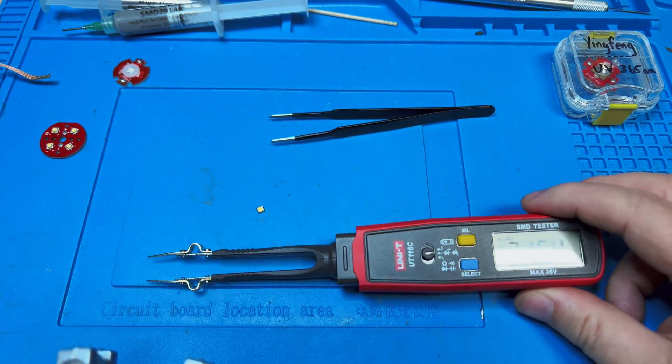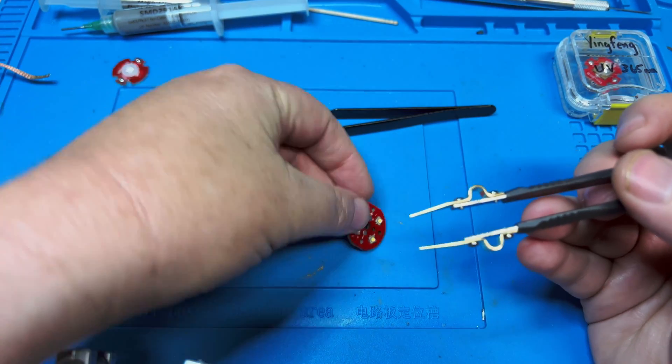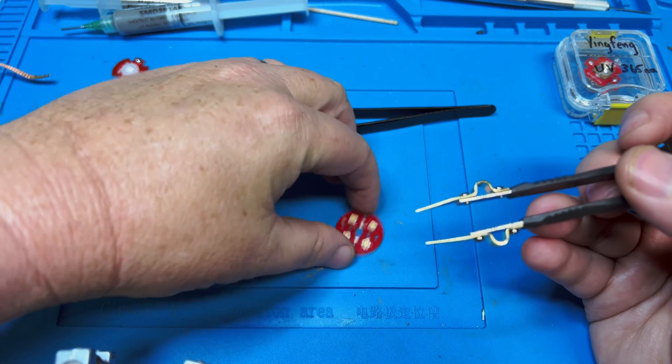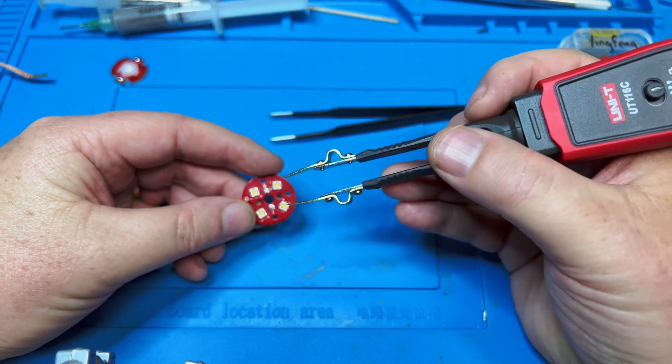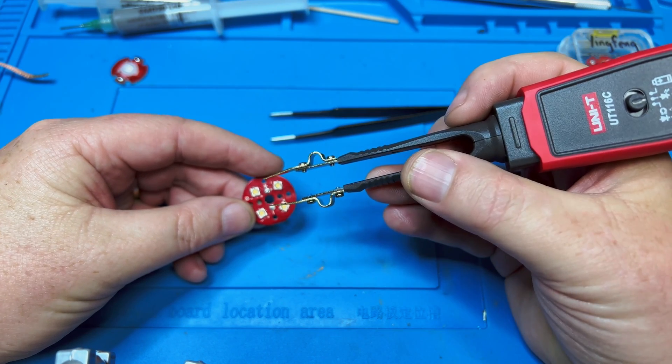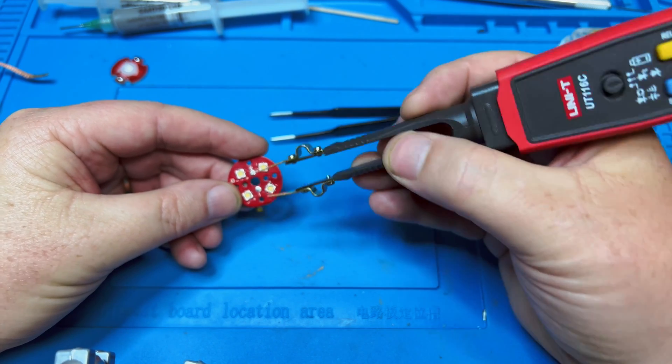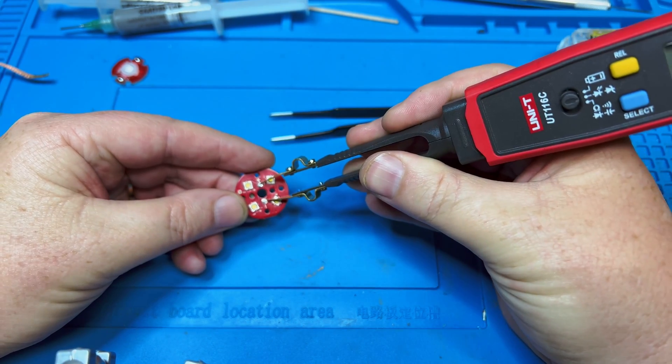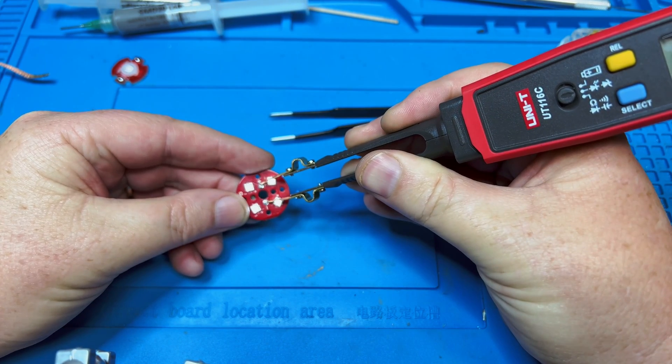Another kind of cool thing you could do with it—last thought before I sign off—is let's say this is installed in the light and you're not sure if you have any shorts before you turn on the light and fry the driver because it's shorted. I would do three steps. I would touch it to the two leads that are soldered and make sure that they still light up.